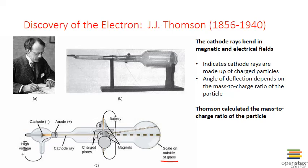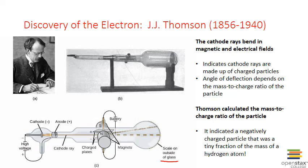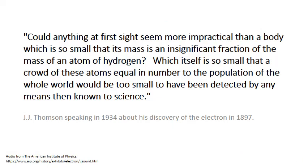What he found astounded him — the mass-to-charge ratio indicated he was dealing with a negatively charged particle that was a tiny fraction of the mass of the smallest atom, the hydrogen atom. This is what J.J. Thompson himself said about his discovery: "Could anything at first sight seem more impractical than a body which is so small that its mass is an insignificant fraction of the mass of an atom of hydrogen, which itself is so small that a crowd of these atoms equal in number to the population of the whole world would be too small to have been detected by any means then known to science."